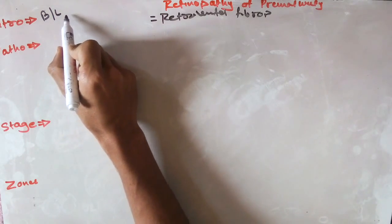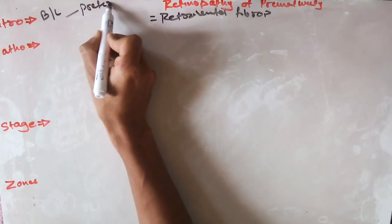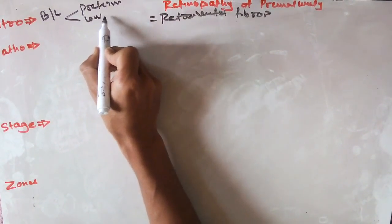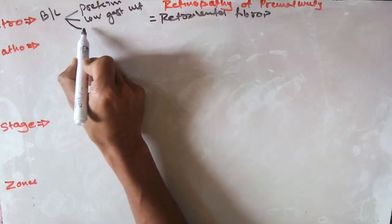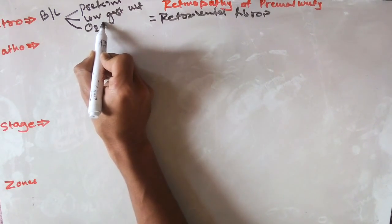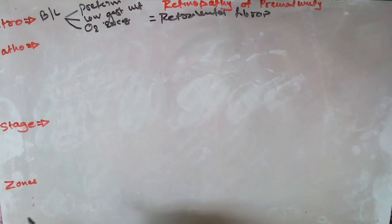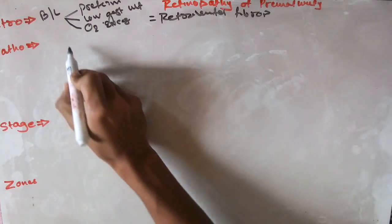It is usually associated with three causes: preterm birth or low gestational age, low birth weight, and excessive supplementation of oxygen supply. Now let's look at the pathogenesis behind retinopathy of prematurity.